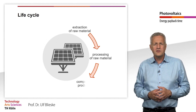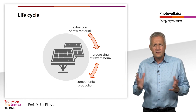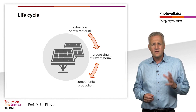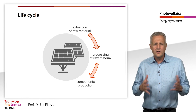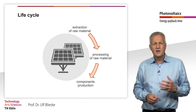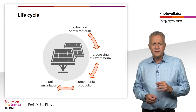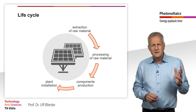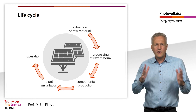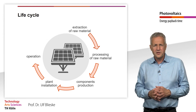Next, the production of the components must be taken into account. This includes, for example, the solar cells and the solar glass, as well as the further processing into modules, but also the other system components we have learned about. The energy required to install the system is also taken into account. The energy required for ongoing operation is very low, as the solar system does not consume any raw materials for this purpose.